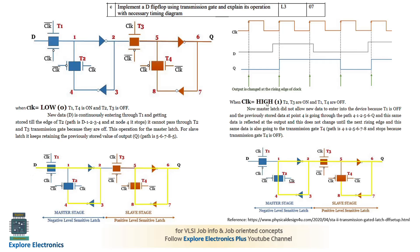When clock goes high, T2 and T3 turn on while T1 becomes off — so we no longer sample new D. The previous value stored in the first stage is transferred through T2 to the second stage. T3 inverts and sends the value to output Q. The path followed is through nodes 4, 1, 2, 5, 6 to Q, giving Q the same value as D sampled at the clock edge. This is the required 7-mark answer.